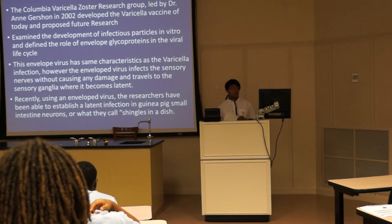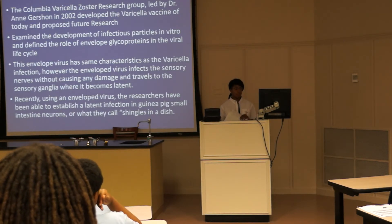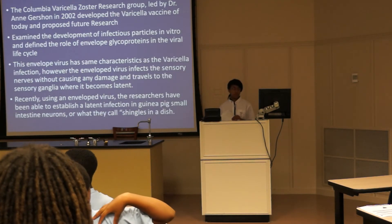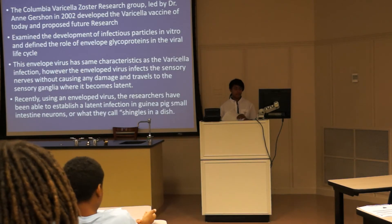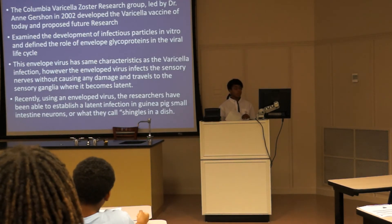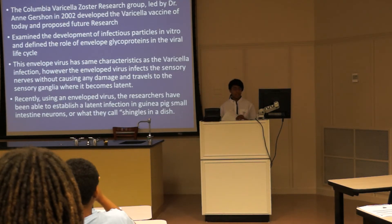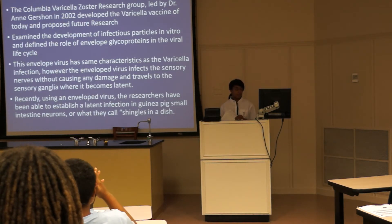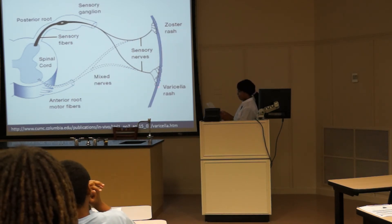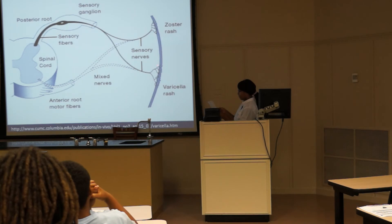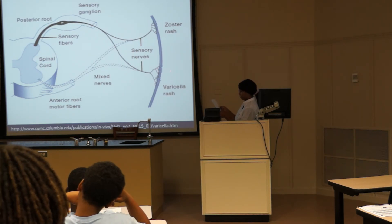Future Research. The Columbia Varicella-Zoster research group, led by Dr. Ann Gershon in 2002, helped develop the Varicella vaccine of today and proposed future research. They examined the development of infectious particles in vitro and defined the role of envelope glycoproteins in the viral life cycle. This envelope virus has the same characteristics as the Varicella infection. With the envelope virus, it infects the sensory nerves without causing damage and travels to the sensory ganglia, where it becomes latent in the bloodstream. Using an envelope virus, researchers have been able to establish a latent infection in enteric small intestine neurons. Here is a diagram of how the envelope virus creates a chickenpox rash and travels from the skin to the sensory nerves, where it becomes latent. If reactivated, the virus travels from the sensory ganglia back to the skin, where it causes the herpes zoster rash.